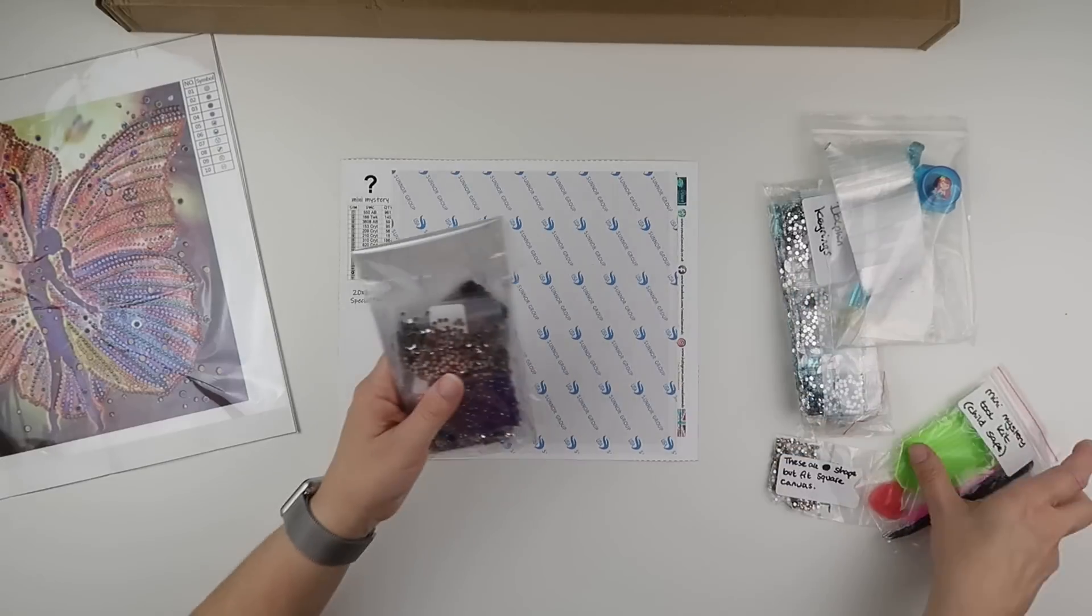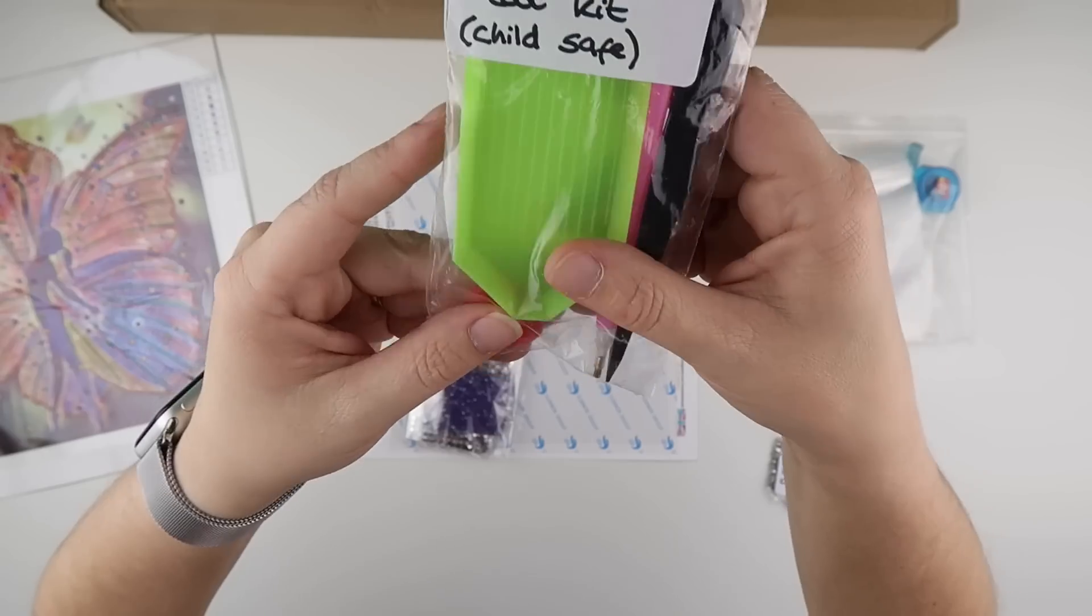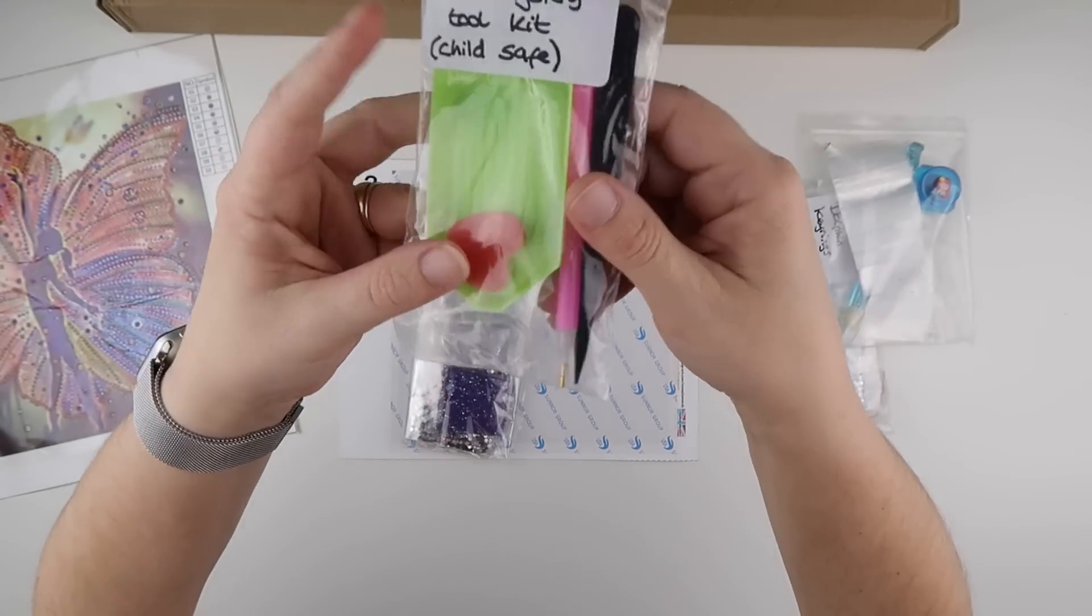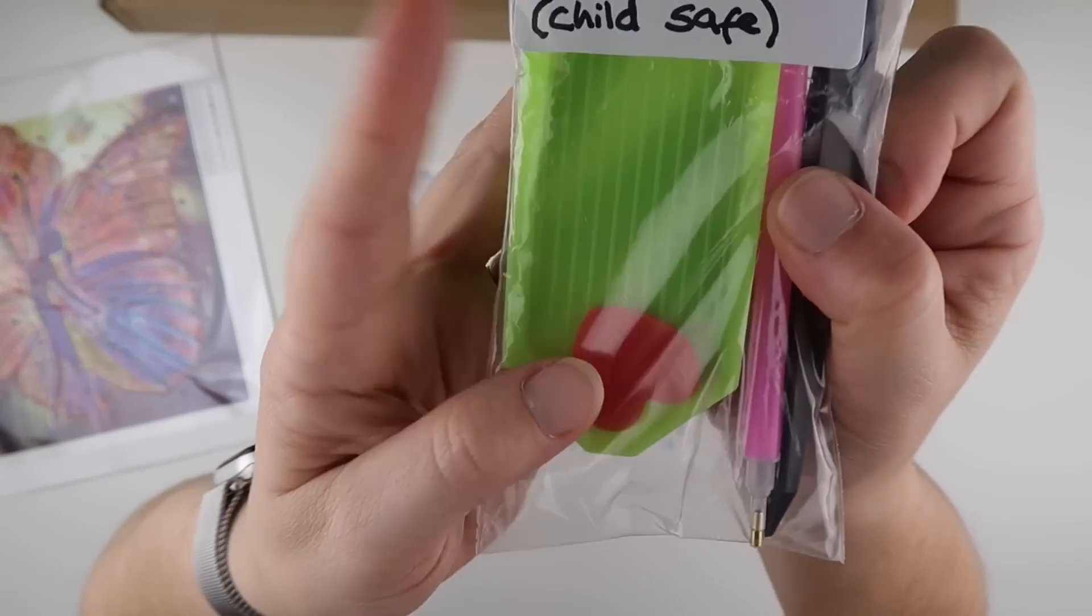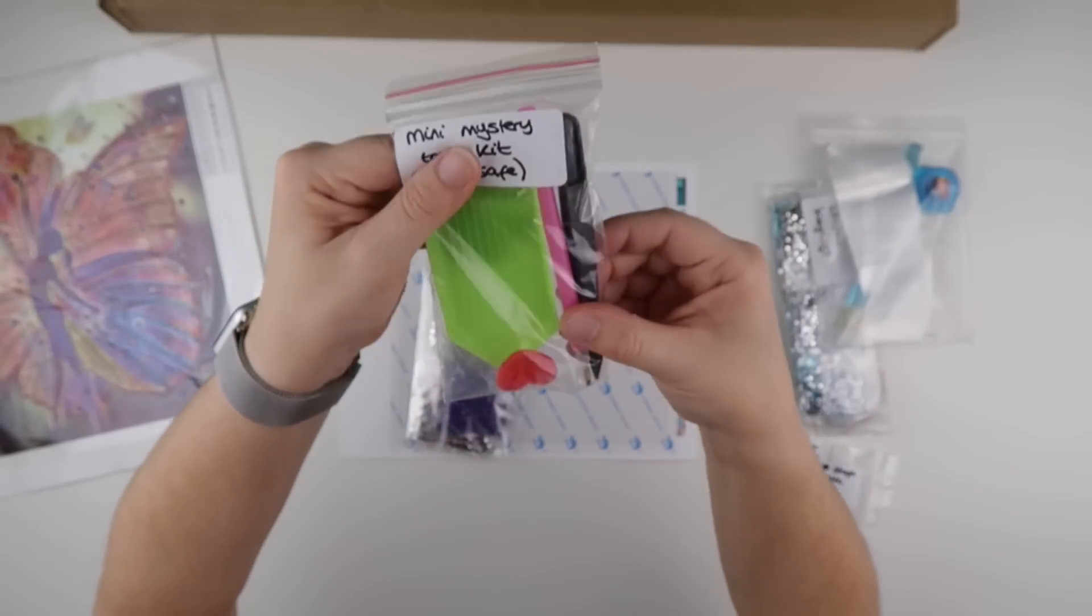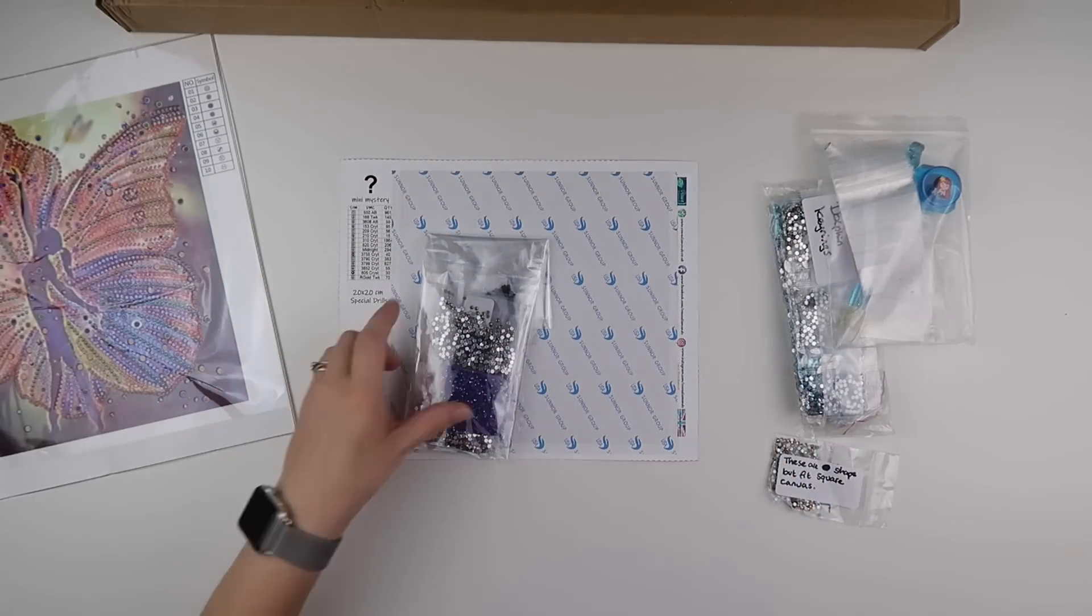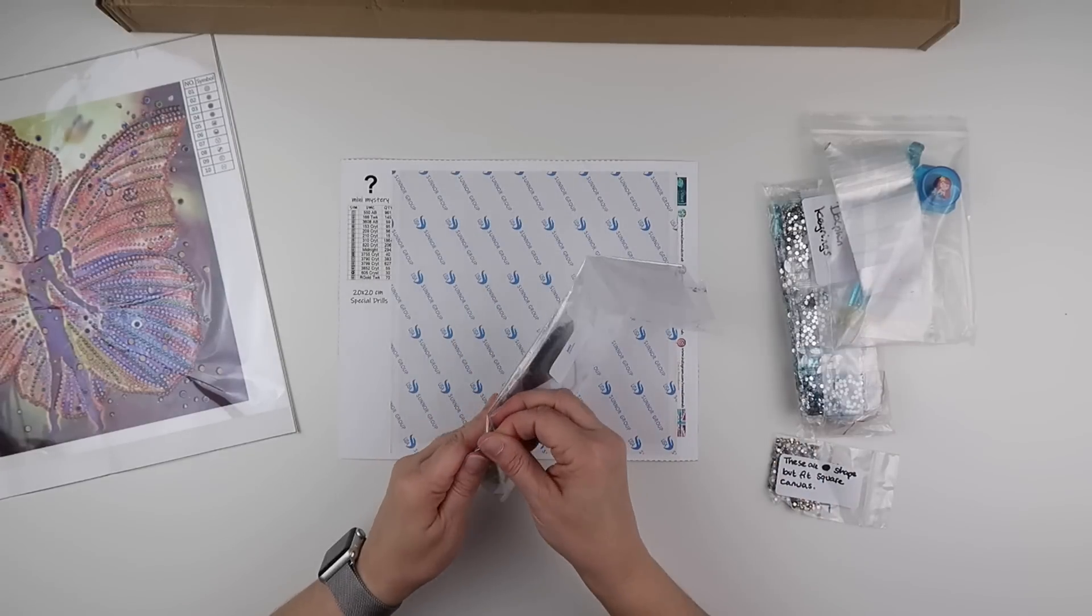And then we do have the toolkit, which is classed as child safe. So these aren't the tweezers that will stab you like nobody's business. We have got a little heart of wax, and then we've got your standard boat and your standard pen. And then to have a look at the colors. So this is the mystery.